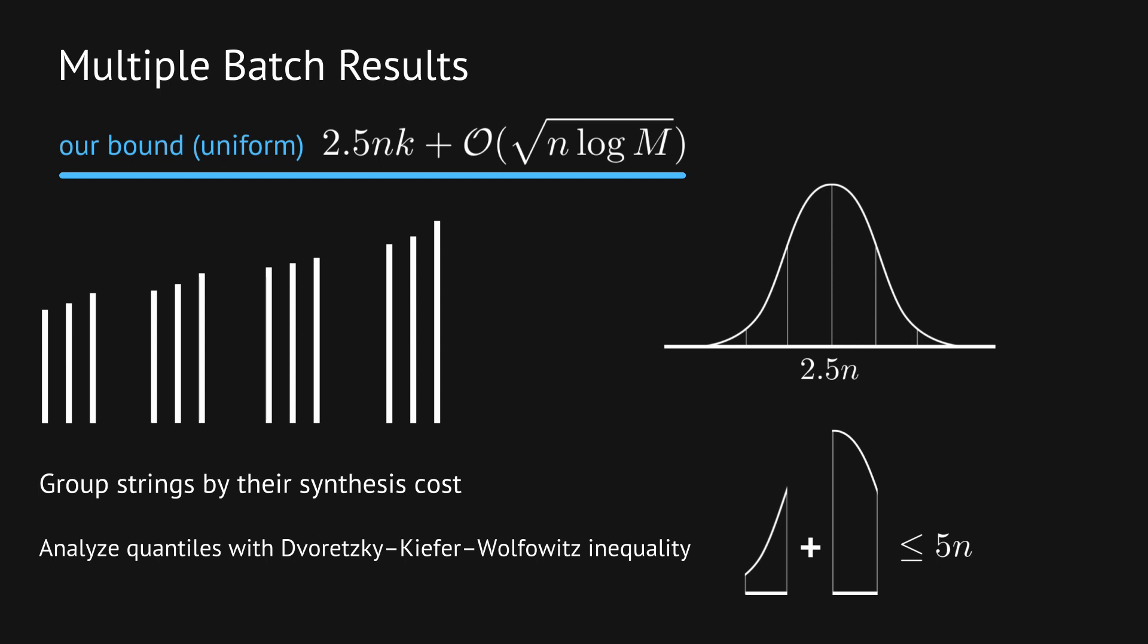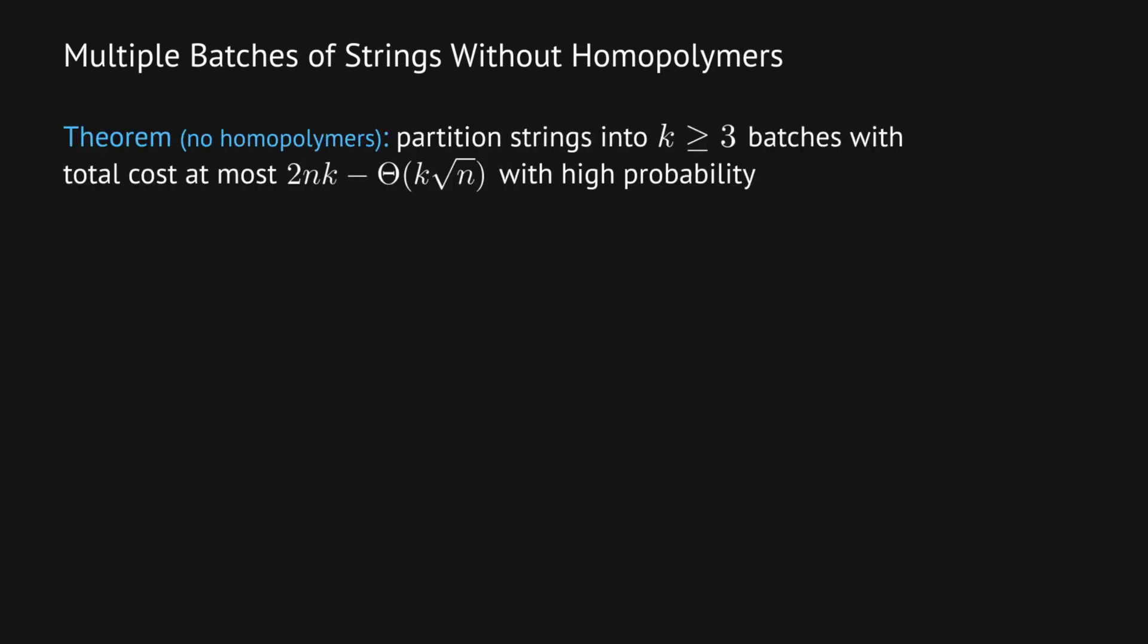So far, I have talked about grouping unrestricted strings into batches. We can save even more if the strings do not have homopolymers. The key idea is to use different super sequences for different batches.